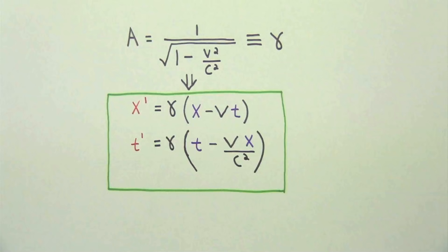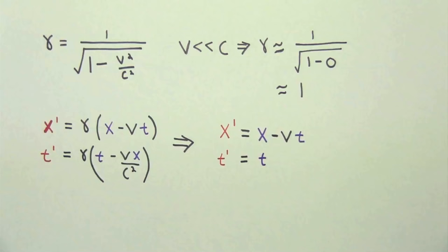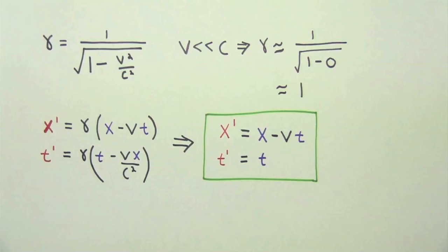Furthermore, we can see that when v is much smaller than the speed of light, which is the case in most of classical mechanics, gamma is approximately 1. So our transformation becomes x prime is approximately x minus vt and t prime is approximately t. For any of you who are familiar with classical mechanics, you will recognize this as the Galilean transformation. This makes perfect sense considering the Galilean transformation is a good approximation when one frame is moving with a small velocity relative to another frame.